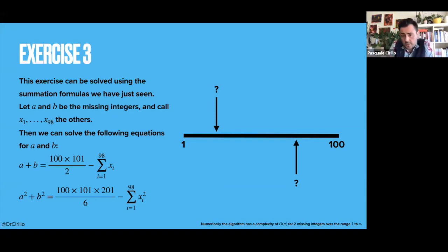Now these integers are from 1 to 100, so they need to satisfy the summation results we have just considered. So if I consider the sum of the integers from 1 to 100, I know that the total sum is equal to 100 times 101 divided by 2, which is the Gauss formula for the sum of integers.